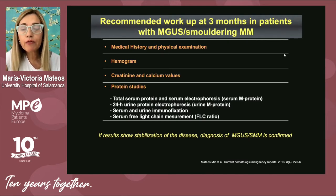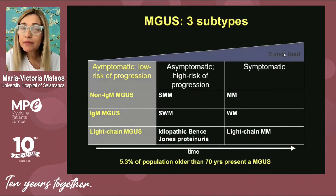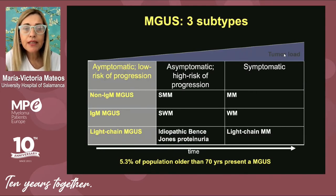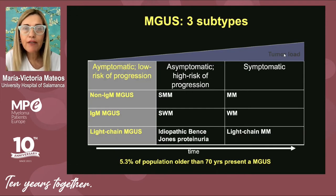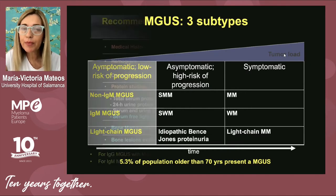The next step is to inform the patients about the diagnosis. Monoclonal hemopathy is basically divided into three subtypes: non-IgM MGUS, IgM, and light chain MGUS. What is important is that MGUS is a very frequent disease — over 5% of the population older than 70 years can present with monoclonal hemopathy.